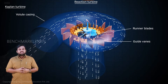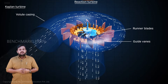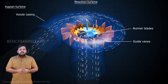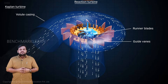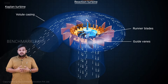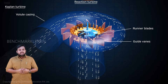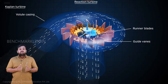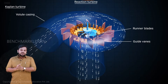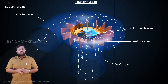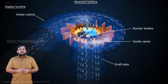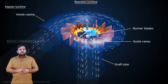Water hits the runner blade and exerts a thrust on it, causing its rotation. The water, after imparting the energy, then flows axially out of the turbine and into the draft tube, which has the same function as described before.